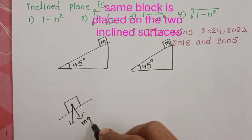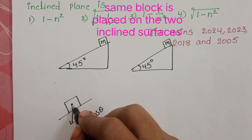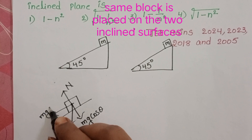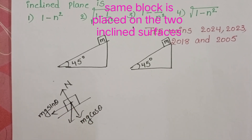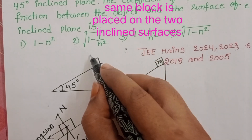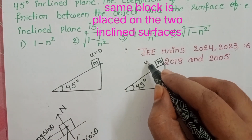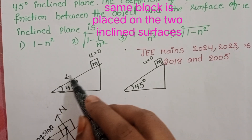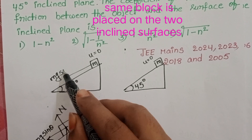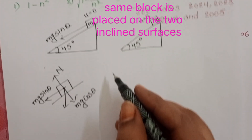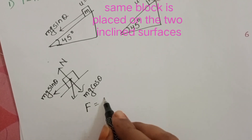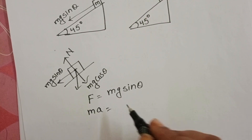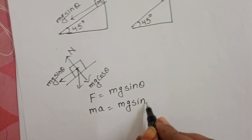The weight of the block is resolved into two components: Mg cos θ, which balances the normal reaction, and Mg sin θ, acting along the inclined plane in the downward direction. The initial speed of both blocks is zero — they start from rest. In the first case (smooth plane), the resultant force equals Mg sin θ. Applying F = MA and cancelling mass, the acceleration is A = g sin θ.